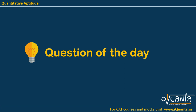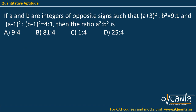Hello everyone. In this video we will again solve a past CAT question which is based upon simple ratios. The question is: if a and b are integers of opposite signs such that (a+3)²/b² = 9:1, and (a-1)²/(b-1)² = 4:1, then find the ratio a²:b².